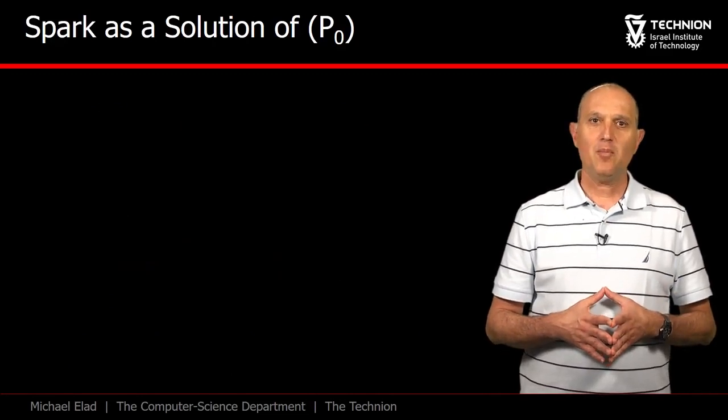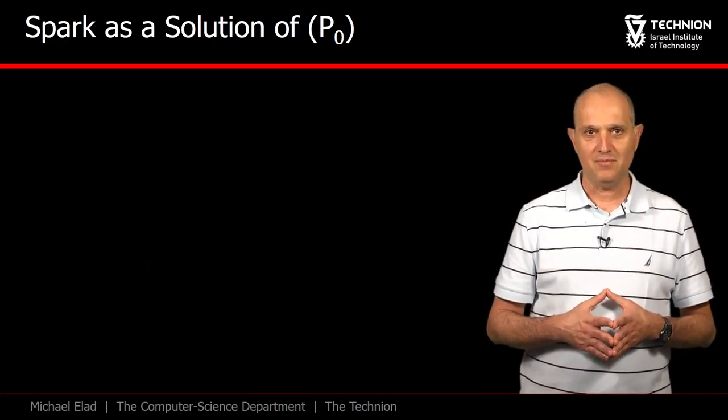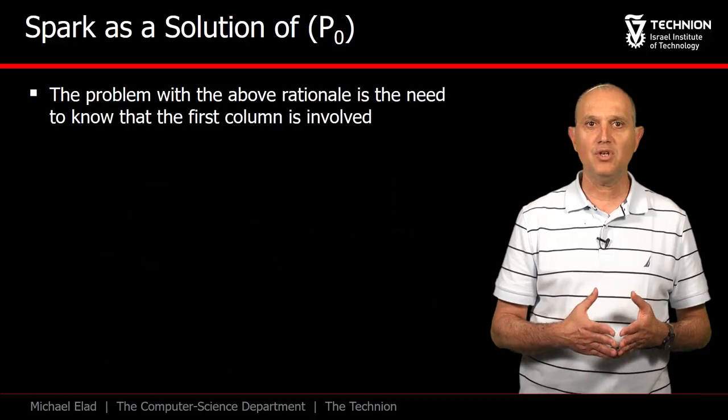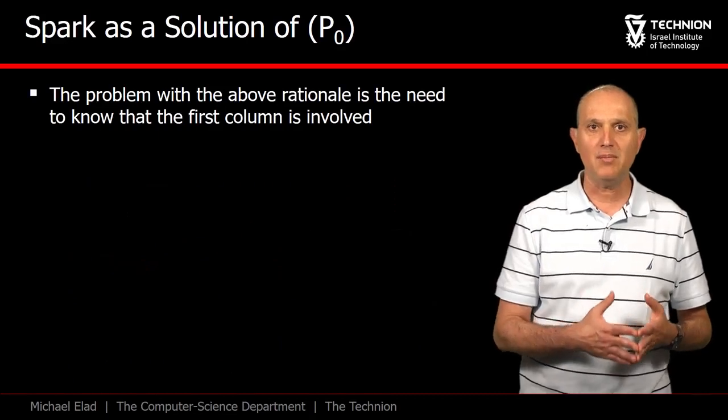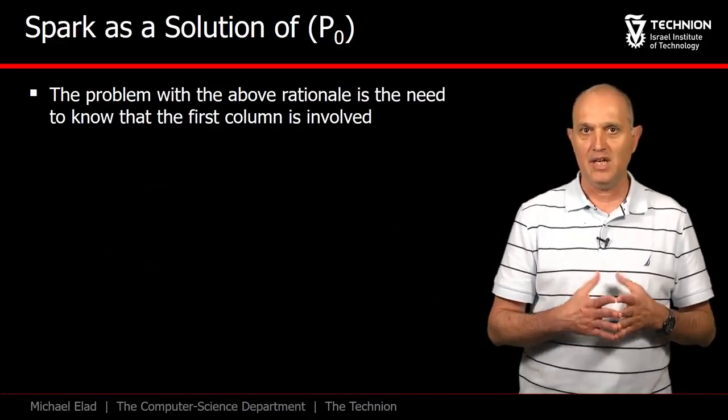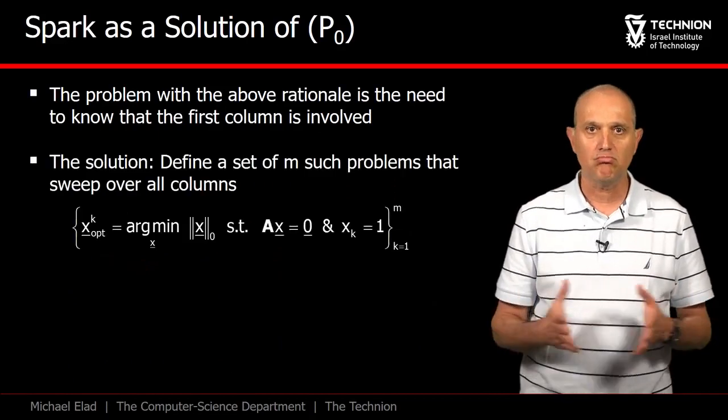There are two problems with the task we have just defined. First, we assume that we know that the first column is within the minimal linearly dependent set. In reality, we have no such knowledge.